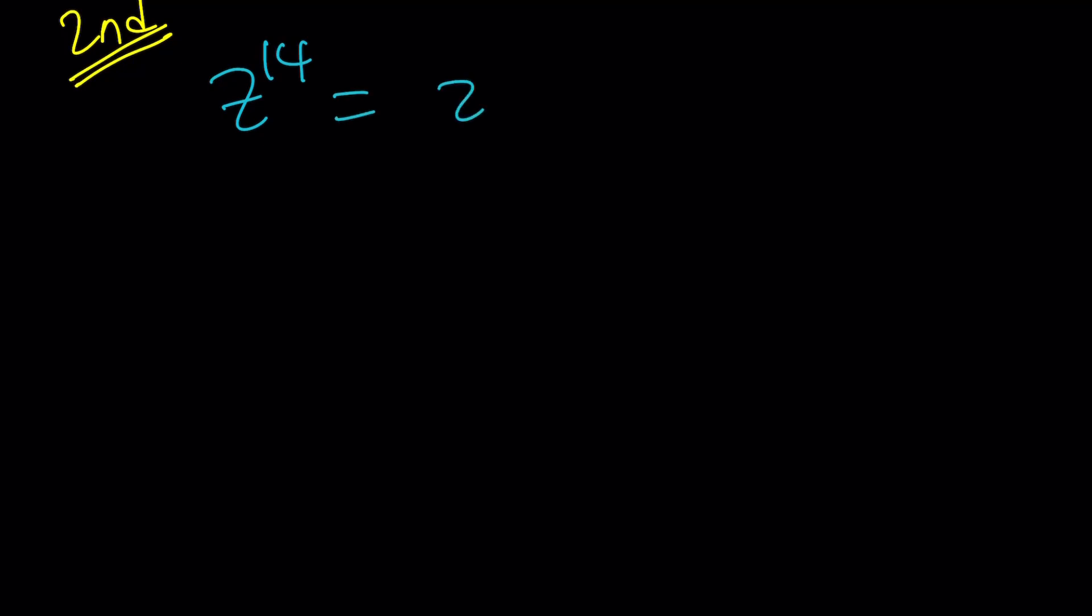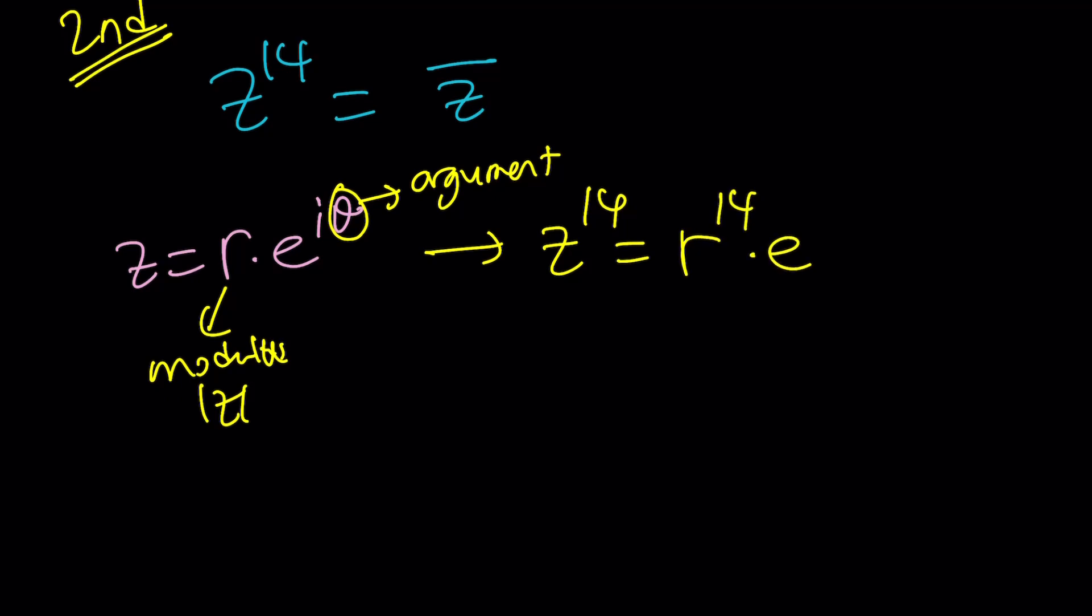We have this equation one more time. Z to the 14 equals Z bar. And then, instead of replacing Z with A plus BI, because that gives us a lot of difficulties, let's do something smarter. One of the things you can definitely do is replace Z with R times E to the I theta. Here, R represents the modulus or the absolute value of Z, and theta represents the argument or the angle. If you raise this to the 14th power, you're going to get R to the 14, E to the power 14 I theta.